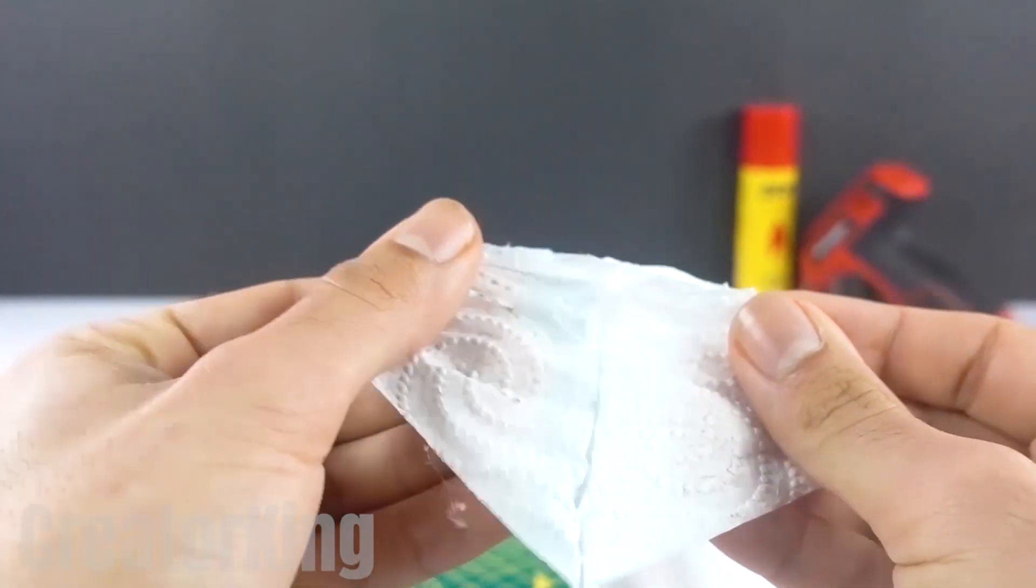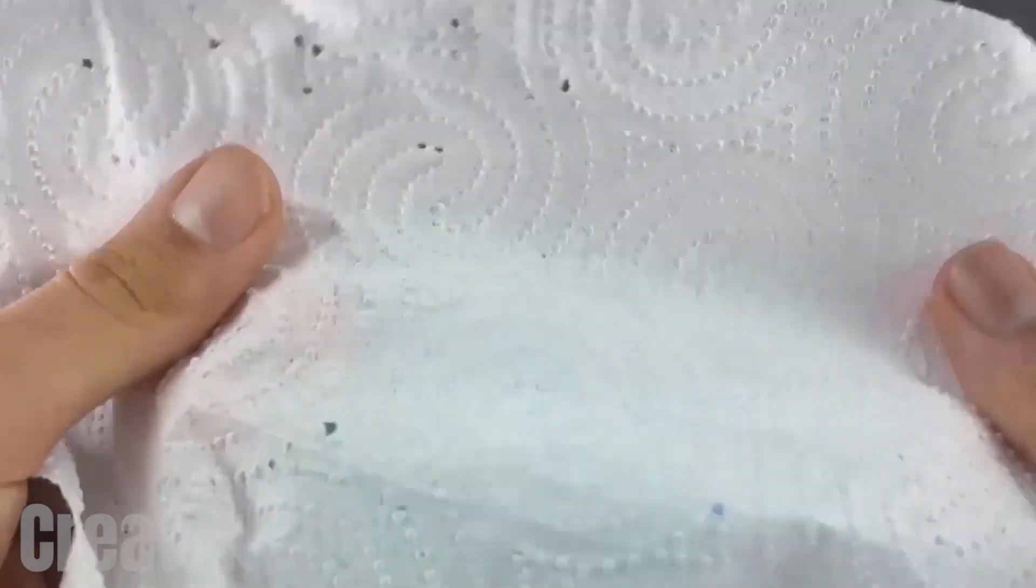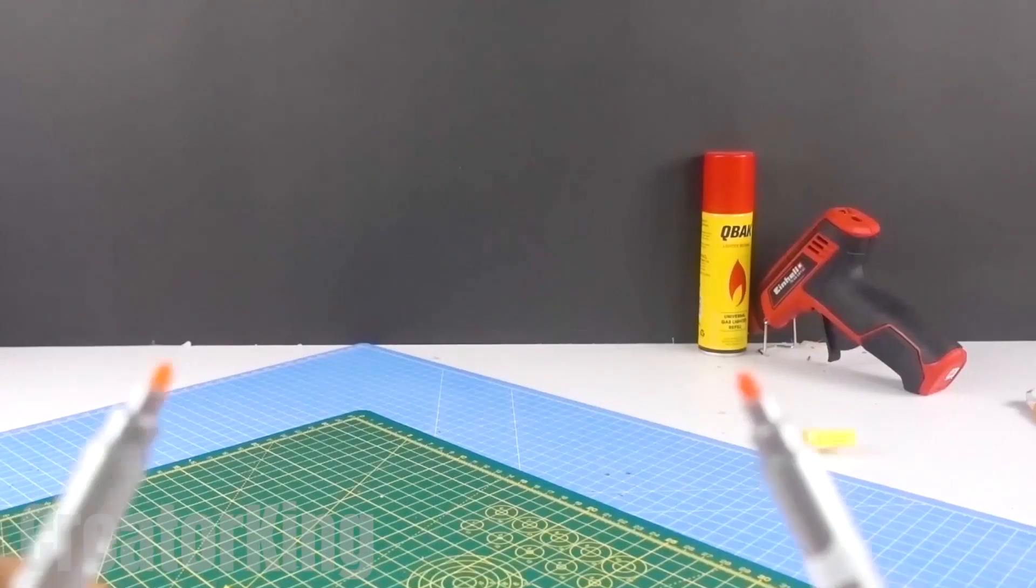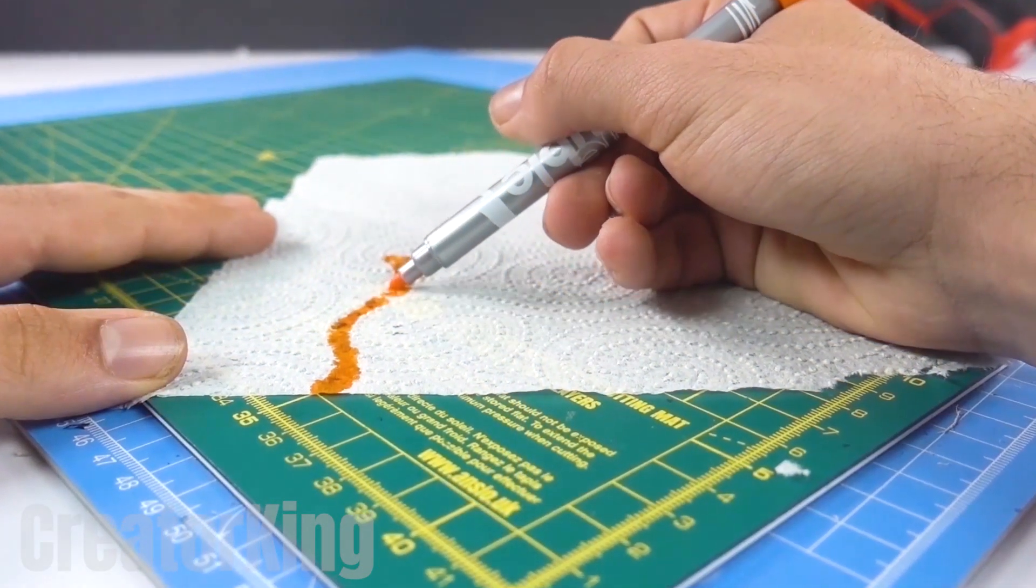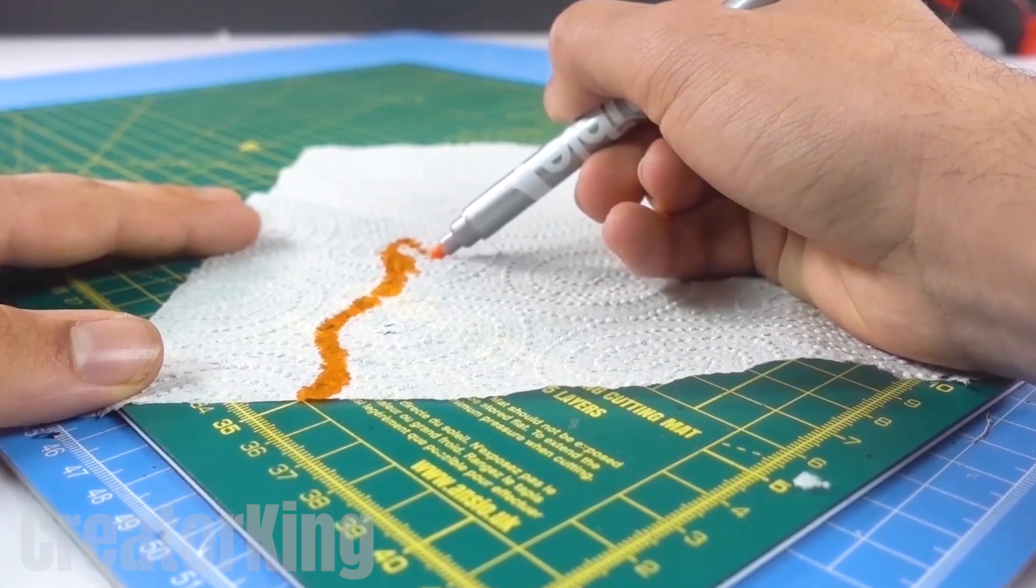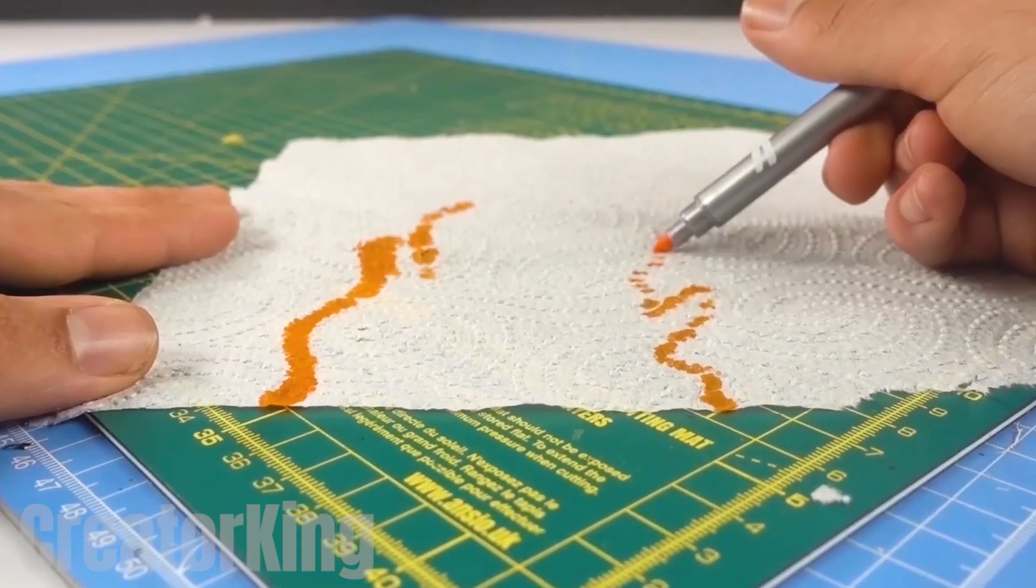Now we'll need toilet paper. You may wonder, why not ordinary white paper? Well, if you pay full attention, you'll see why. Find some markers in a color you like. I'll use warm colors. Begin to draw a flame design on the paper. Now you get why I chose warm colors.